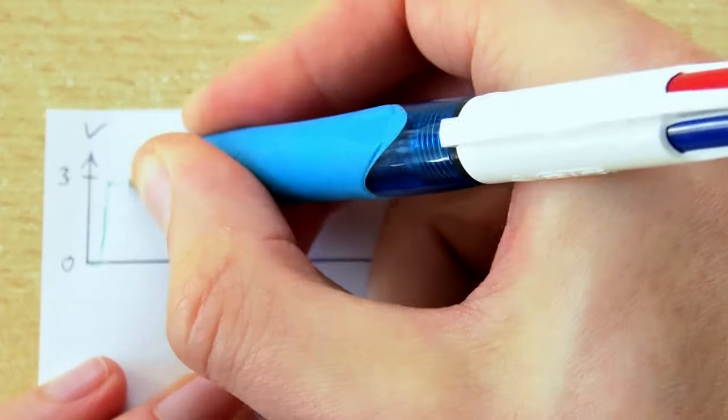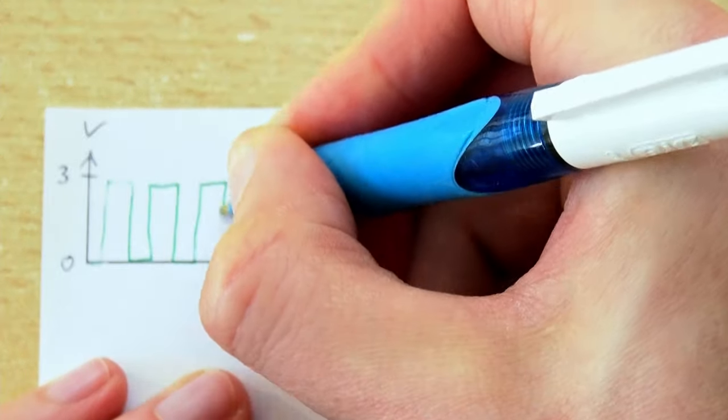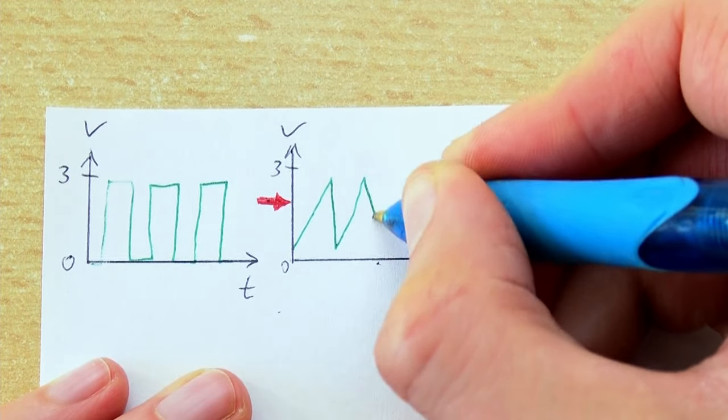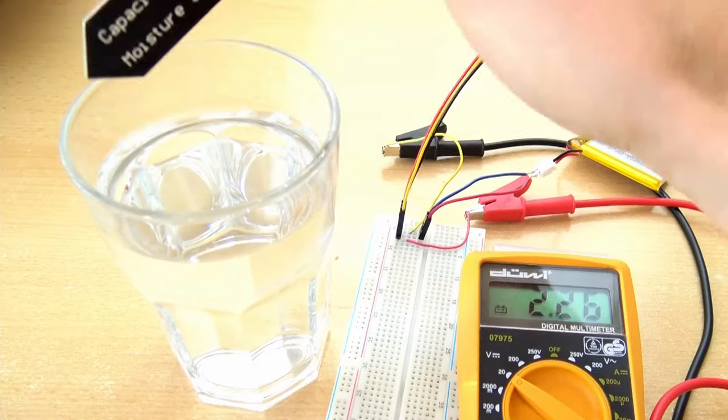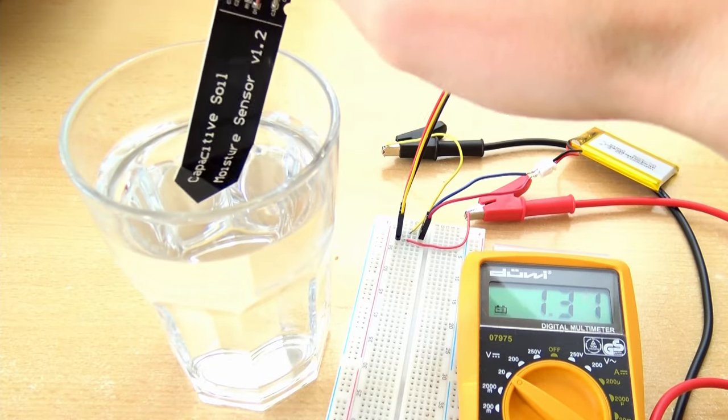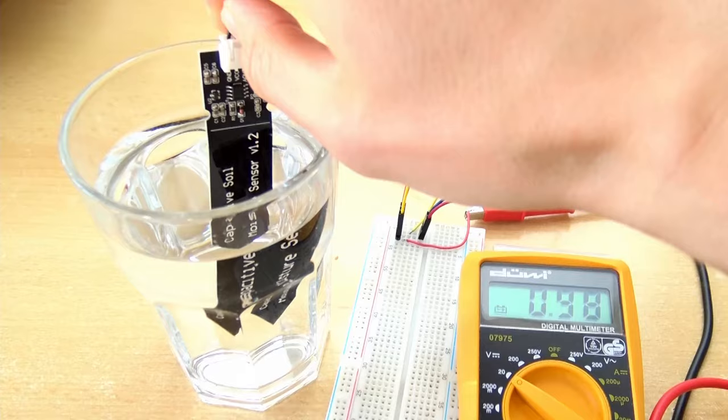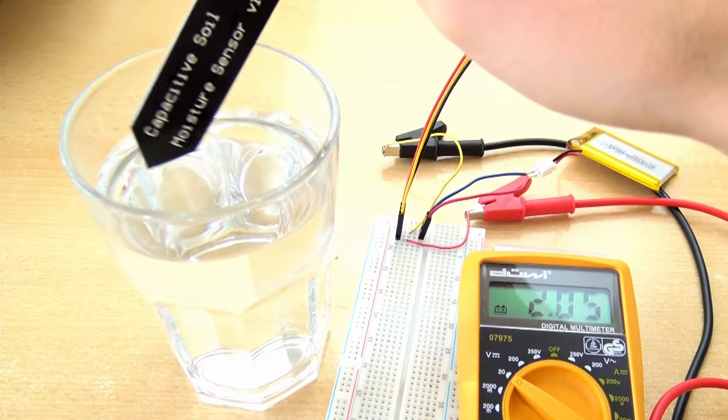A timer chip is then used to create an electrical square wave that gets converted into an analog DC voltage by a bunch of other components. The exact output voltage depends on the capacity of the sensor and thus on the amount of water nearby.